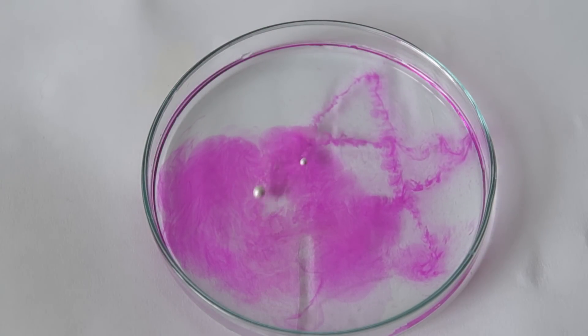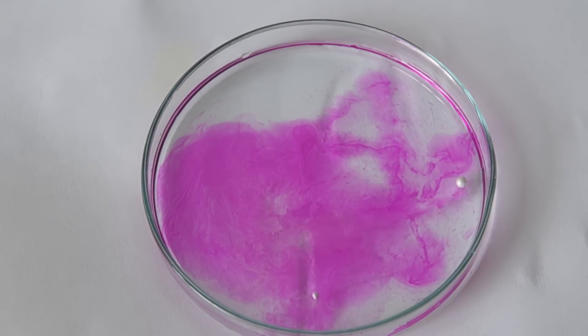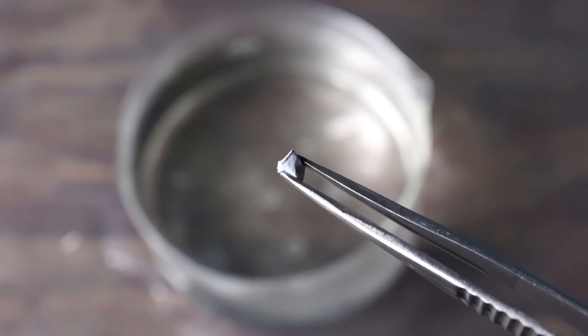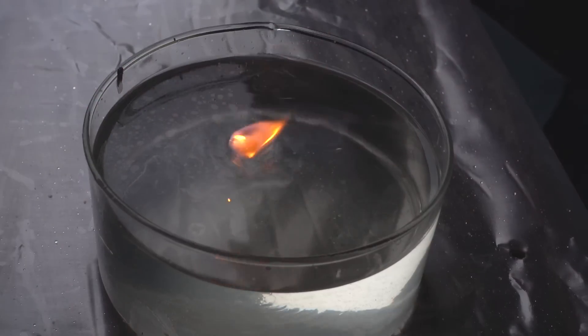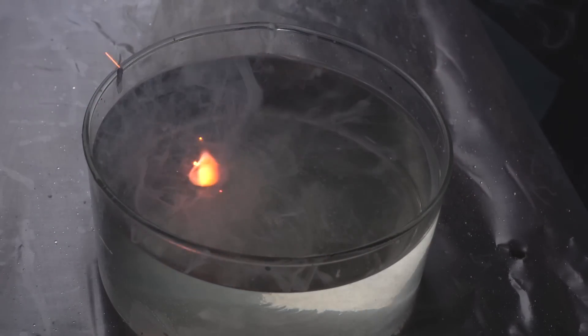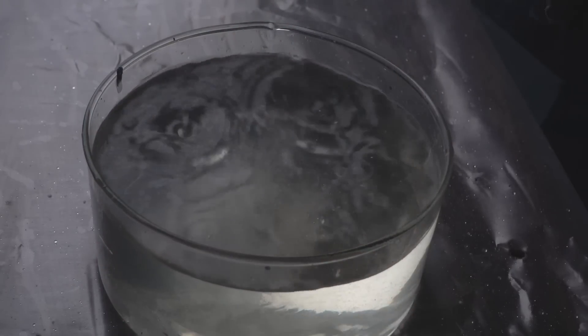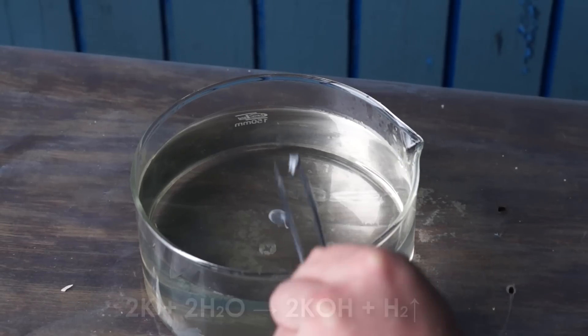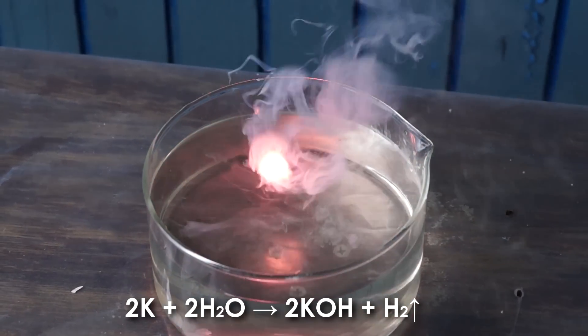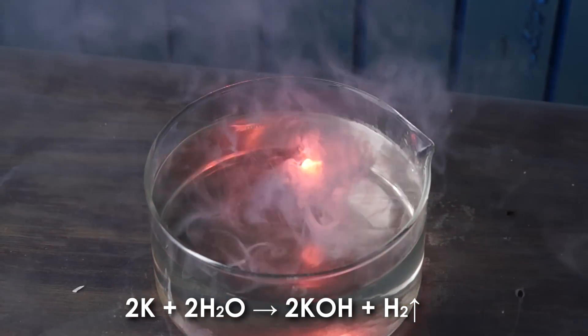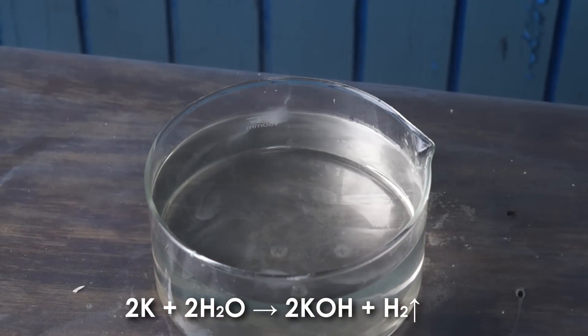So if small pieces of sodium react with water more or less calmly, even small pieces of potassium immediately ignite and explode spontaneously. The reaction of potassium and water produces alkali and hydrogen is released which burns with pink flames due to potassium ions.